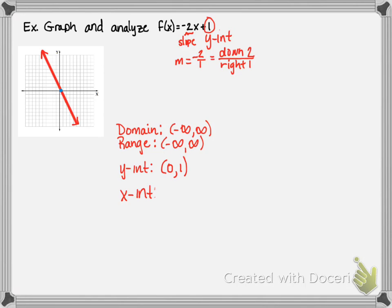Our x-intercept is right here where the graph crosses the x-axis. Now, it might be hard to estimate it from the graph, so we can solve this algebraically. Whenever we're solving for an intercept, we set the opposite variable equal to 0. So for the x-intercept, set y equal to 0.